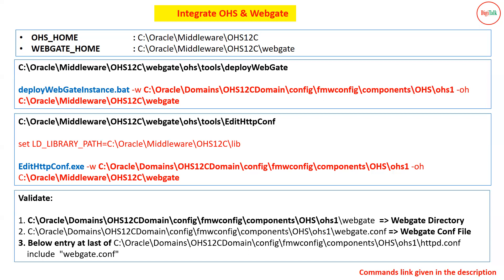Once both commands execute successfully, they will create a directory named WebGate inside your OHS instance directory — where you have all the configuration files of OHS. Inside that it will create a WebGate folder with a few files, and inside the same OHS folder it will create a file called webgate.conf, which is the main configuration file for your WebGate. It will also enable the WebGate inside your httpd.conf file by adding one line at the end: include webgate.conf.